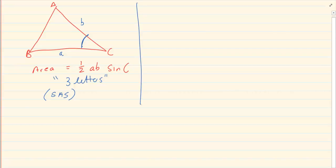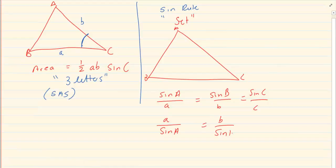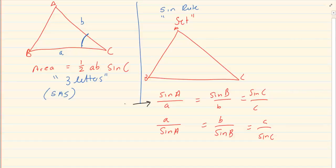The second rule is the sin rule. The best way to remember it is to have a set. The sin rule says sin A over A equals sin B over B, which equals sin C over C. It can also be written as A over sin A equals B over sin B equals C over sin C. To make your algebra easier: if you are solving for an angle, let the angle be on top; but if you are solving for a side, let the side be on top.